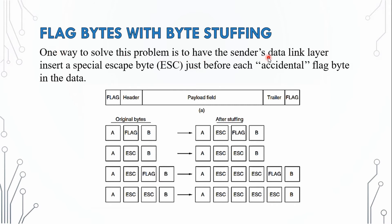One way to solve this problem is to have the sender's data link layer insert a special escape byte just before each accidental flag byte in the data. So if the data contains a flag byte, we insert an escape byte before it. For example, if the original data is A, flag, B — after byte stuffing it becomes: A, escape byte, flag, B.